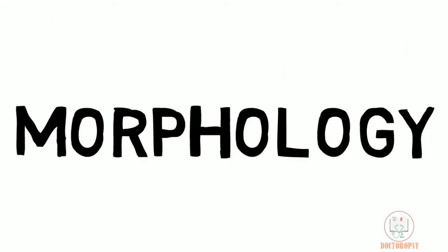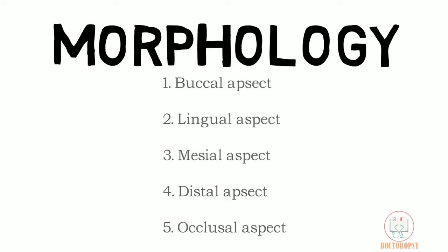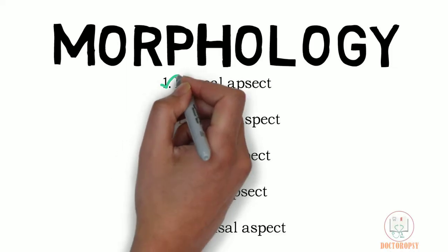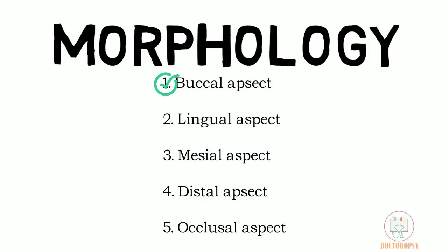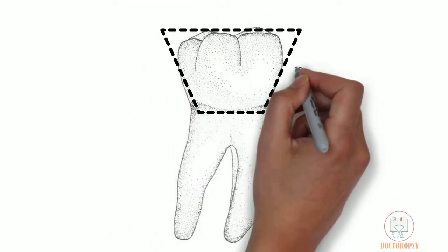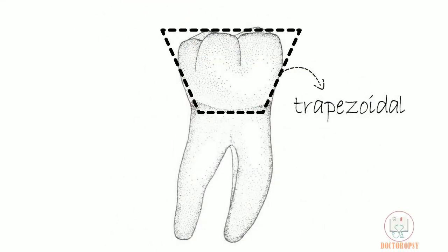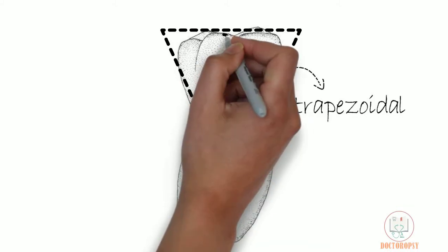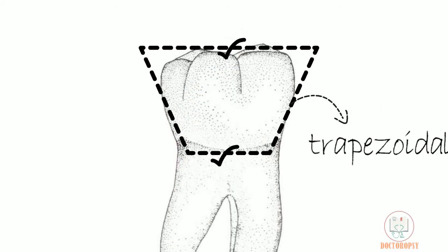The morphology of the tooth is studied under 5 aspects. Starting with the buccal aspect: the outline form of the crown from the buccal aspect is trapezoidal, with its shorter parallel side towards the cervix and the longer side towards the cusps. From this aspect, all 5 cusps are visible.